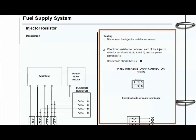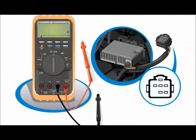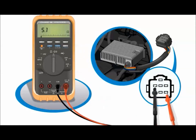To test the resistors, follow the steps listed in service information. In this example, you first disconnect the injector-resistor connector. Then check the resistance between each of the injector-resistor terminals and the power terminal. The resistance value should be between 5 and 7 ohms. If any of the resistance readings are outside the specification, replace the resistor assembly.